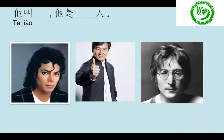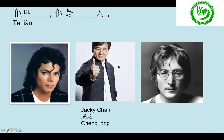Now look at these three pictures. These are males. 你认识她吗? 她是谁? 她是Michael Jackson. Now we just need to use similar sentences: 她叫 - his name is Michael Jackson. 她是美国人, he is American. 你认识她吗? 她叫Jackie Chan. 她的 Chinese name is 成龙. 你认识她吗? Yes, 她叫John Lennon. 她是英国人.